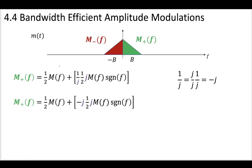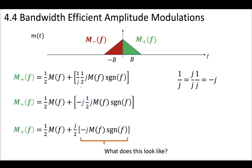And we have a -j, one-half j, M, multiplied by the signum function. Now if we remove this part, so if we take this part, pull it to the front here, we can see that this is really starting to look like that Hilbert transform that we discussed.